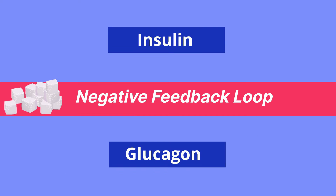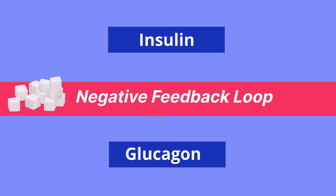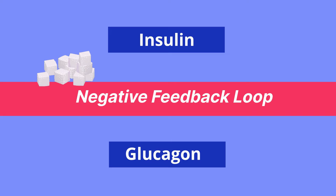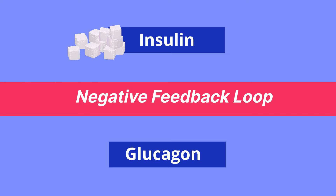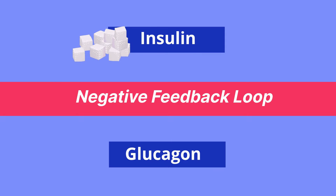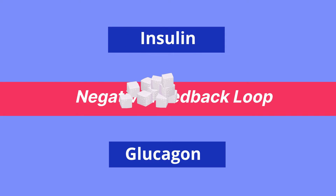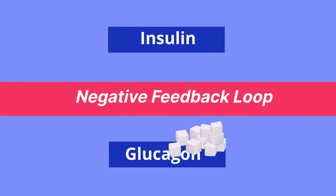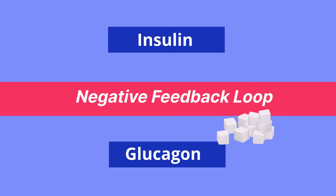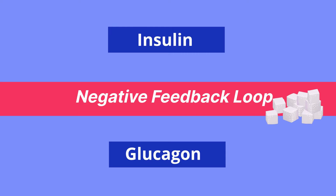An example in the human body is if your glucose levels get too high, then insulin will be released to lower it. And if your glucose levels get too low, then glucagon is released, which will raise the glucose levels.